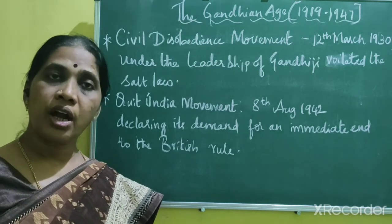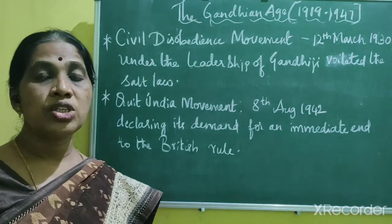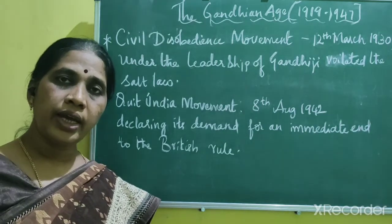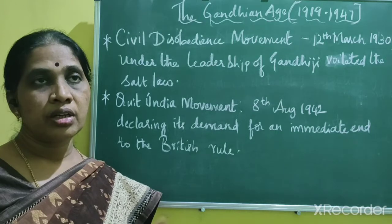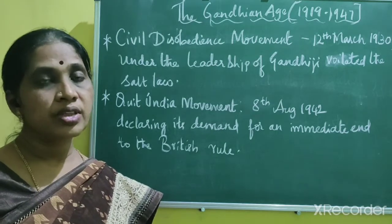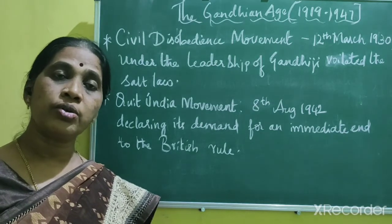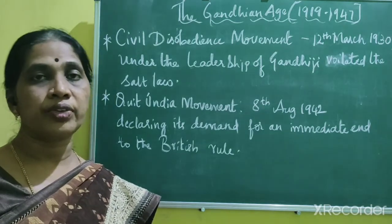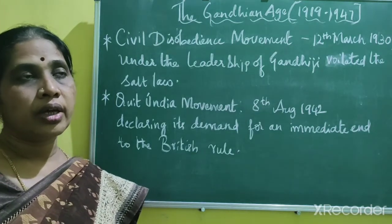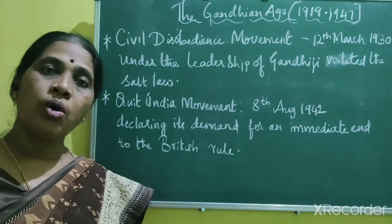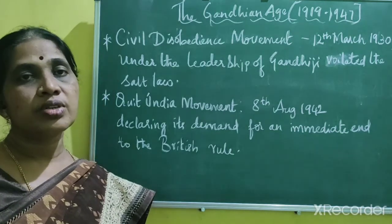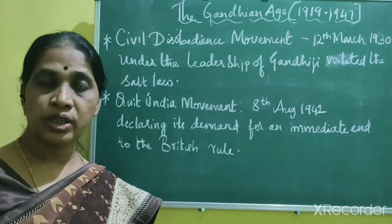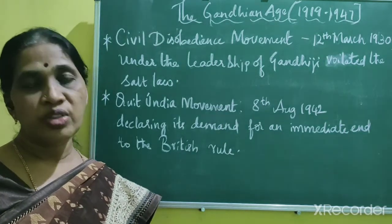Immediately after Gandhi announced the Quit India Movement, the British arrested him. However, younger activists like Jaiprakash Narayan and others continued the movement, and widespread strikes broke out in different parts of the country. It took the British government more than one year to suppress and put down this momentum.